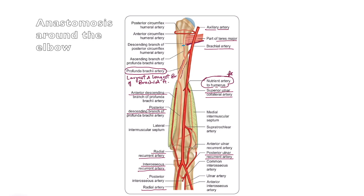At the level of the supracondylar area, the brachial artery gives the supratrochlear artery, which splits into two branches — one communicates with the superior ulnar collateral, and the other descending branch is called the inferior ulnar collateral artery. This inferior ulnar collateral artery anastomoses with the anterior ulnar recurrent artery, which is also a branch from the ulnar artery.